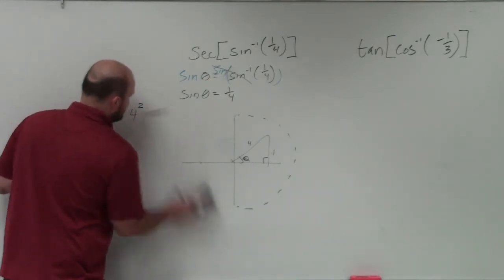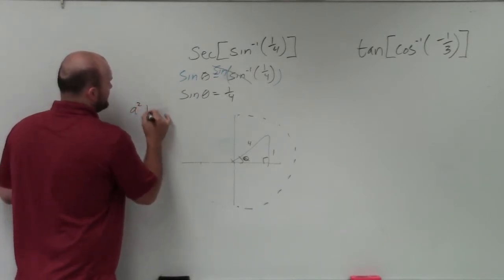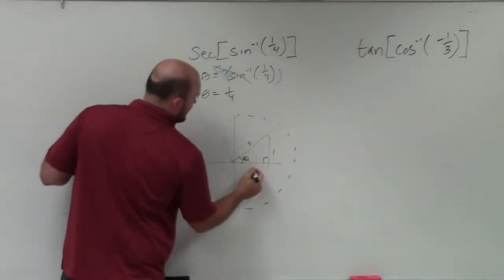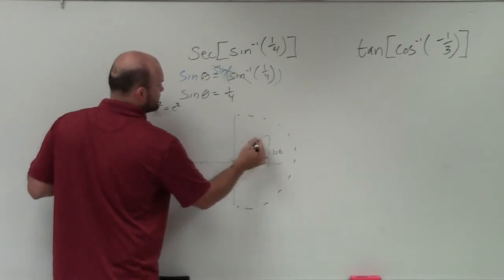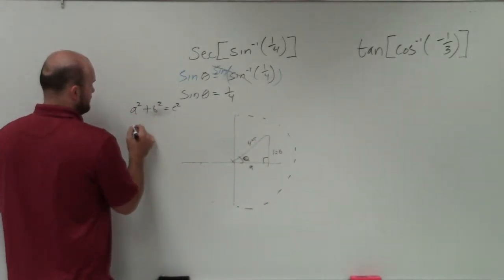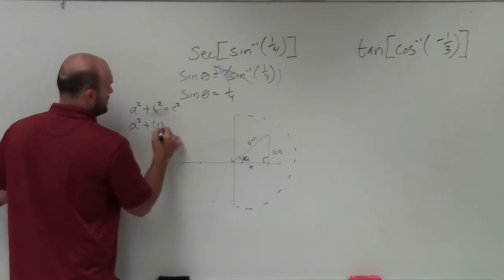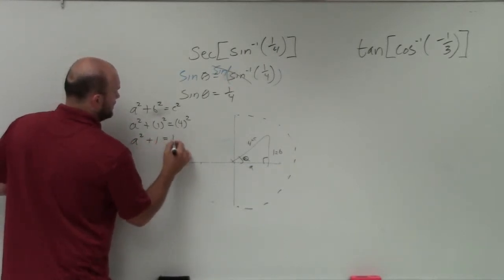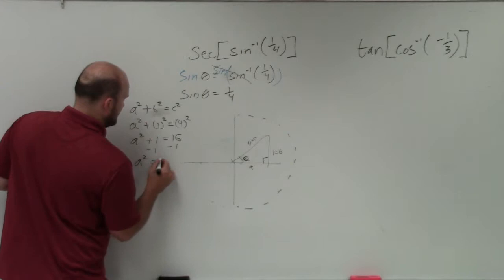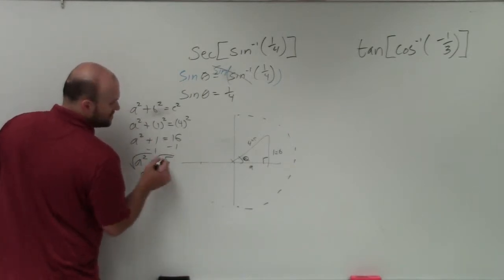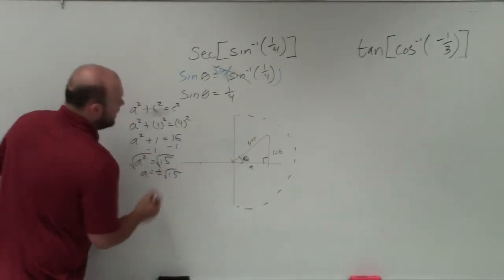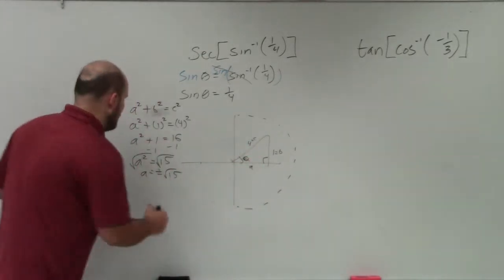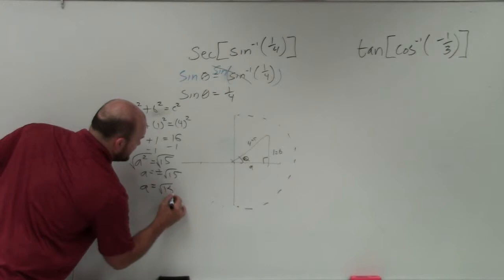So you can do a squared plus b squared equals c squared, where a, b are your legs, and c is going to be your hypotenuse. So therefore, I have a squared plus 1 squared equals 4 squared. So I have a squared plus 1 equals 16, minus 1, minus 1, a squared equals 15. Take the square root, take the square root. A equals plus or minus the square root of 15. However, since we see that our triangle is in the first quadrant, we know that a is going to equal positive square root of 15.